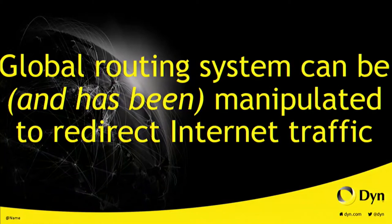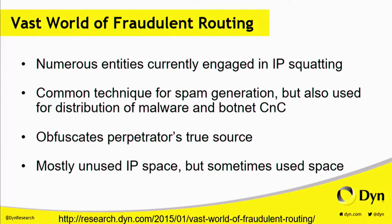The system has been manipulated, and we've put out over the years a handful of examples of this. Another area we're talking about more and more is fraudulent routing — various entities announcing address space that doesn't belong to them for nefarious purposes. This has long been a technique associated with spam generation, but it's also been linked to malware and botnet C&Cs. The objective of the perpetrator is to hide their presence — this is the equivalent of a throwaway mobile phone for a criminal. They can try to be untraceable. Mostly this is using unused address space, though occasionally it veers into used address space, in which case actual traffic could be misdirected.